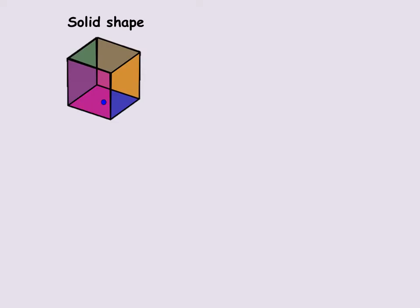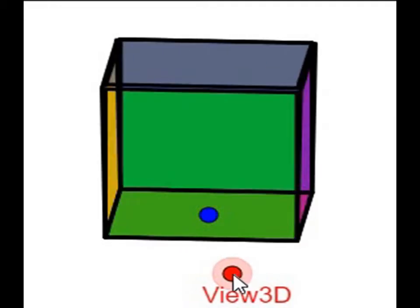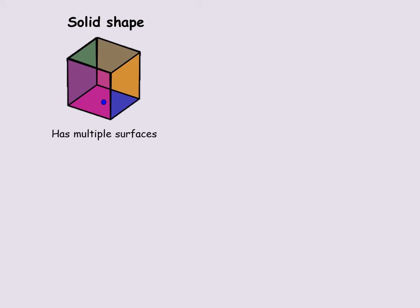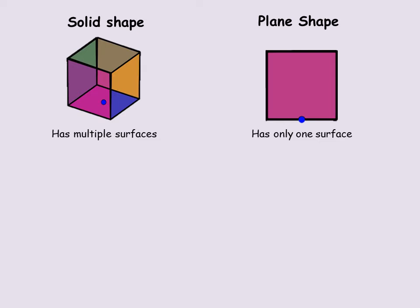A solid shape is a shape that has multiple surfaces — another word for multiple is 'many,' so it has many surfaces. When I rotate this cube, you can see it has many surfaces, shown by the different colors. A solid shape is different from a plane shape; a plane shape only has one surface. Shapes like trapezium, rectangle, and triangle are plane shapes — they are flat.